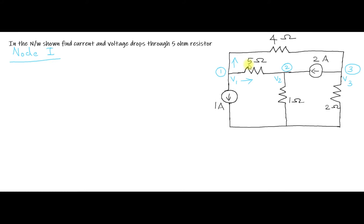You have to find the current and voltage drops in this 5 ohm resistor. I have assigned Node 1 here, Node 2 here, and Node 3 here. Now I am going to analyze Node 1 first. I have taken current direction leaving from Node 1. The Node 1 elements are this 5 ohm, this 4 ohm, and this 1 ampere current source. I have assigned V1 potential here, V2 potential here, and V3 potential here.